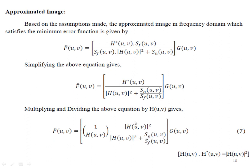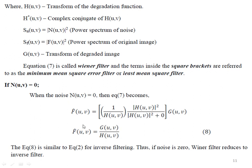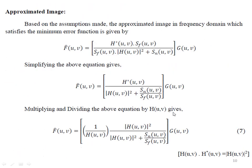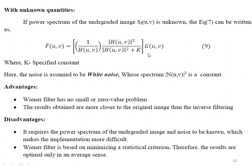When the noise term is completely zero, this term cancels, and the equation reduces to inverse filtering — this is what we call the inverse filter. When the noise is zero, the Wiener filter reduces to the inverse filter. In the equation, if we assume the noise is white noise, then Sn(u,v)/Sf(u,v) becomes a constant K.